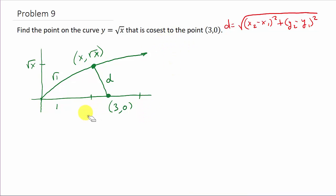So I need to minimize the distance from the point (3,0) to the point (x, square root of x). We'll call this point (x1, y1), and this one (x2, y2). It doesn't matter which is which. The distance is the square root of (x2 minus x1) squared plus (y2 minus y1) squared.